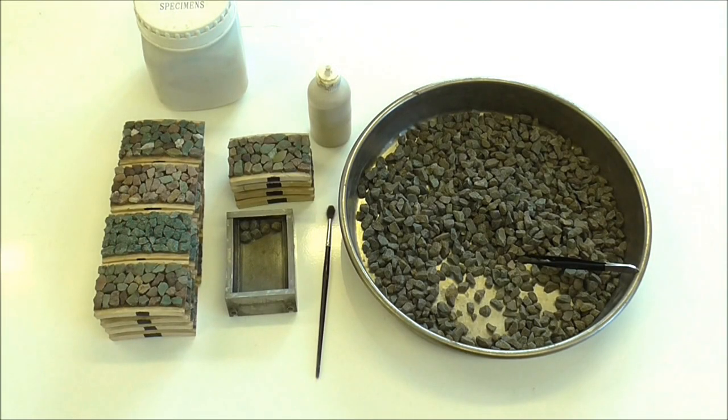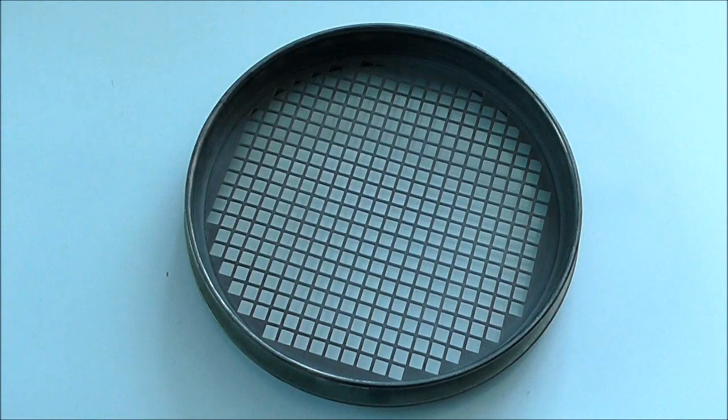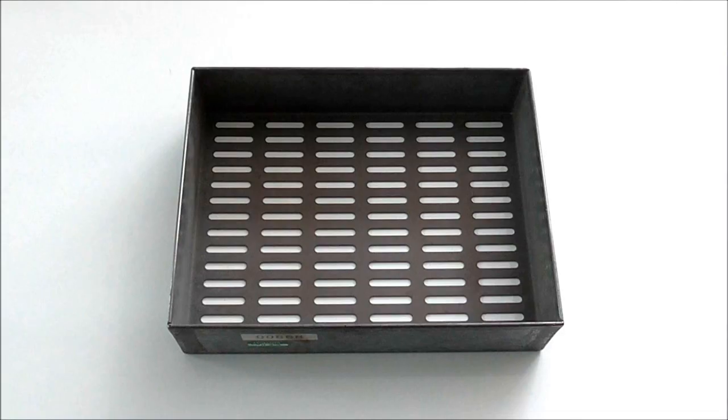The PSV test is a measure of an aggregate's resistance to polishing and is performed on particles that pass a 10mm sieve and are retained on a 7.2mm grid sieve.